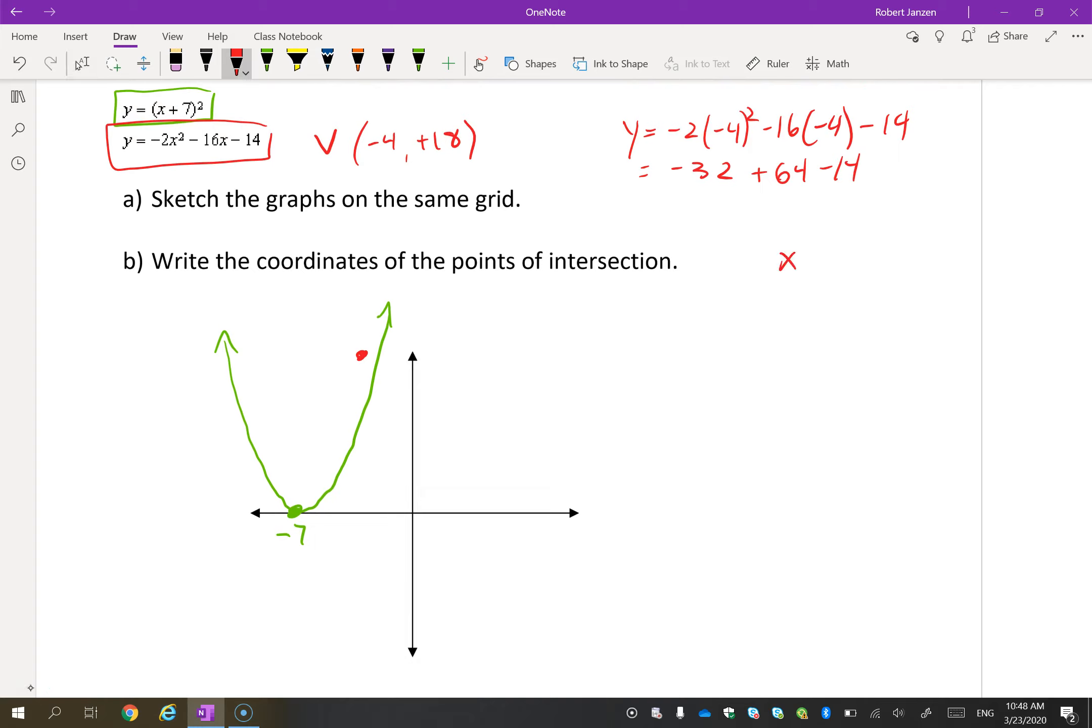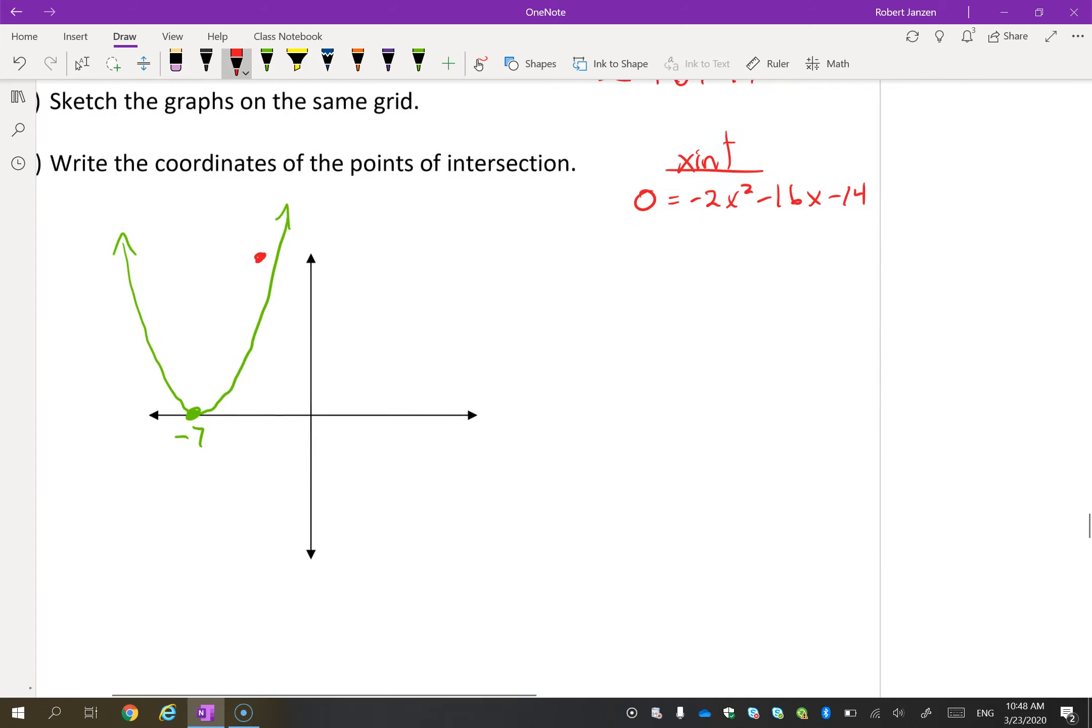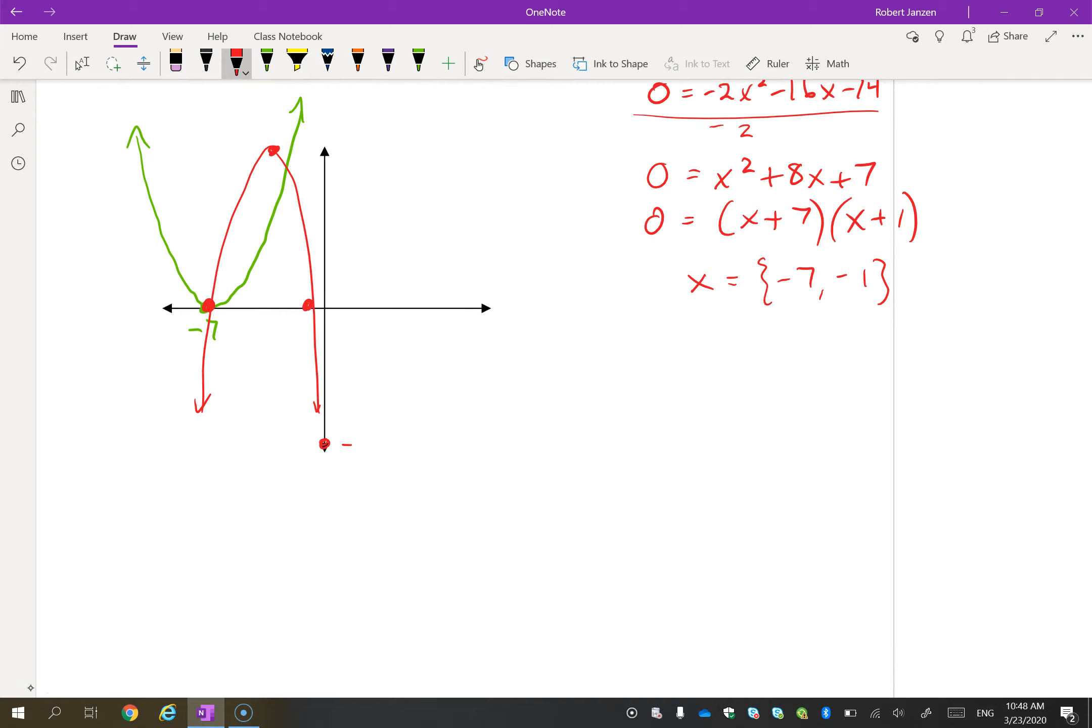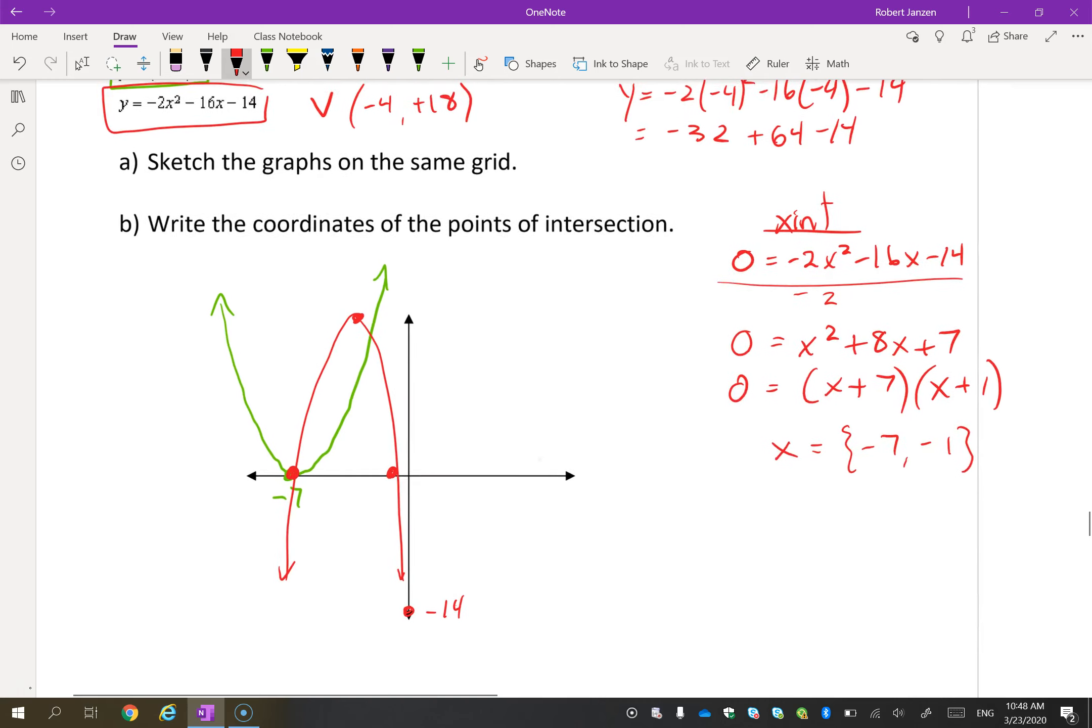If we find what our x-intercepts are, let's do that really quickly. I'll go through this one fairly quickly because, honestly, we should know how to do this already. If I divide everything by negative 2, you can have x² + 8x + 7. And so this is (x + 7)(x + 1). So you get negative 7, negative 1. All right, and so this parabola will look something like this. The y-intercept here would be negative 14 down there. So those are the two parabolas.